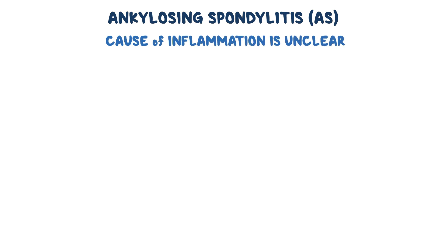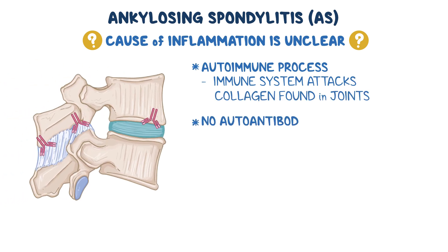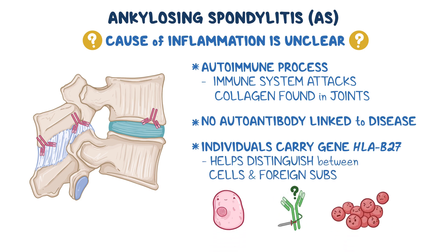The exact cause of inflammation in AS is unclear, but it's thought to be due to an autoimmune process, which is when the immune system attacks its own tissue — in this case, the collagen found in the joints. While no autoantibody has been specifically linked to the disease, most individuals with AS carry the gene HLA-B27, which plays a key role in helping the body distinguish between its own cells and foreign substances.